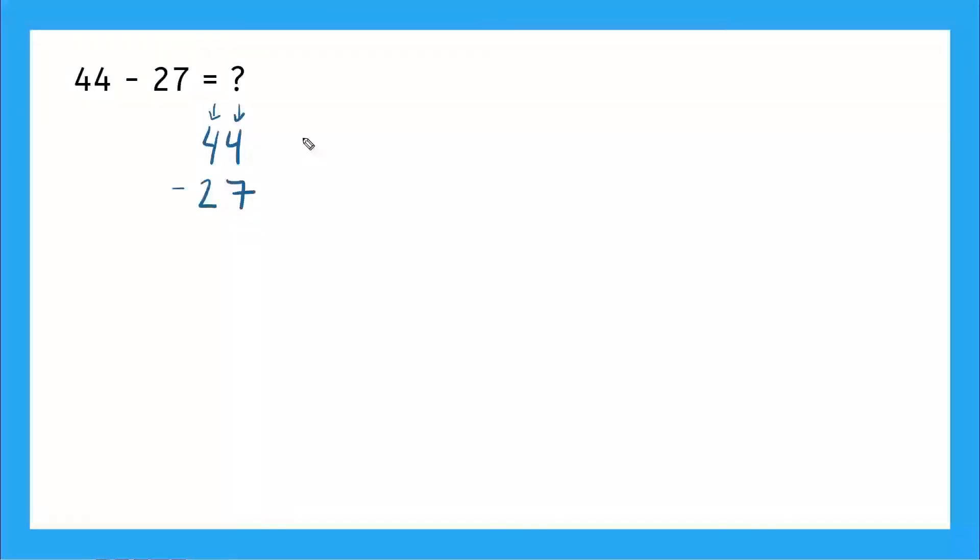We can expand these numbers out to make it really clear. So this is really saying 40 plus 4 minus 20 plus 7. That makes sense. 44 is 40 plus 4 and 27 is 20 plus 7. So let's start here with this expanded version. We need to subtract 7 from 4.